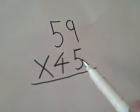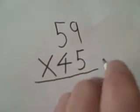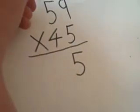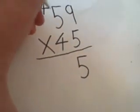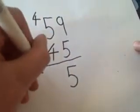First you times the first digit on the bottom number. So in this I would do 5 times 9 first. 5 times 9 is 45, so I put the 5 there and the 4 up there because it's a 10. Now I do 5 times 5 and that's 25 plus that 4 is 29.